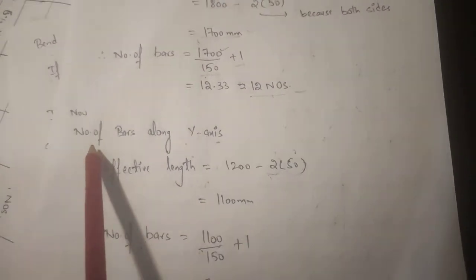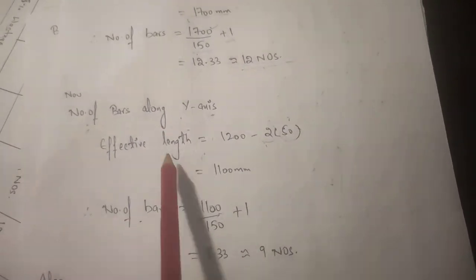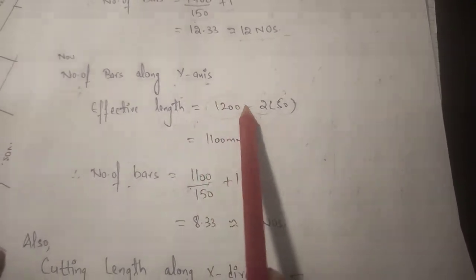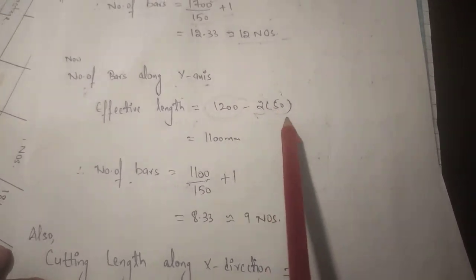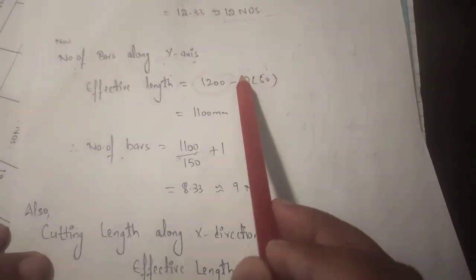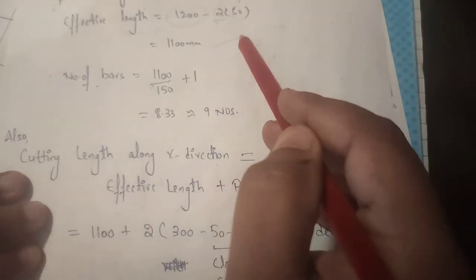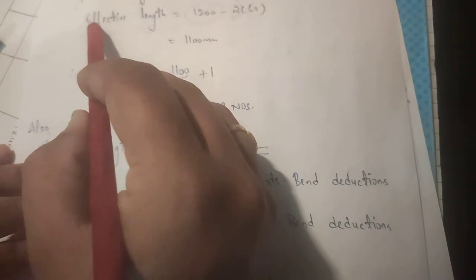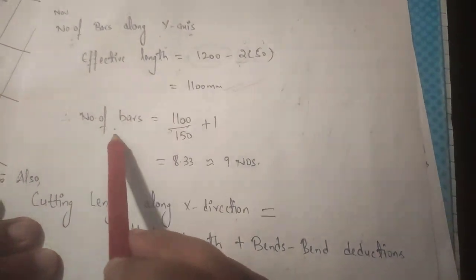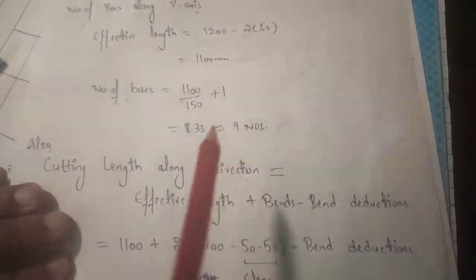Similarly, for bars along the Y axis, the effective length equals the length along the X direction minus 2 times the clear cover: 1200 minus 2 into 50 = 1100 mm. Therefore, number of bars = 1100 / 150 + 1 = 9 numbers.